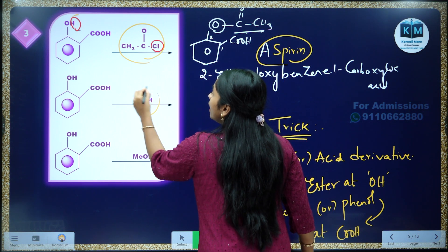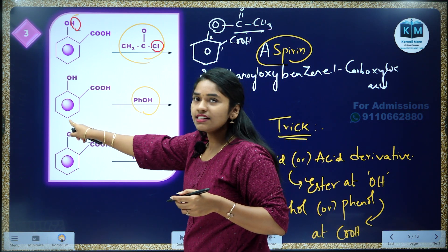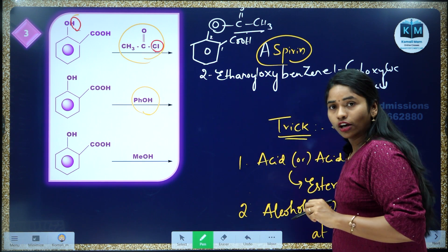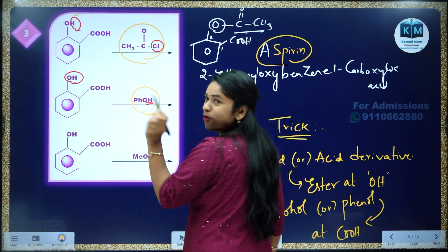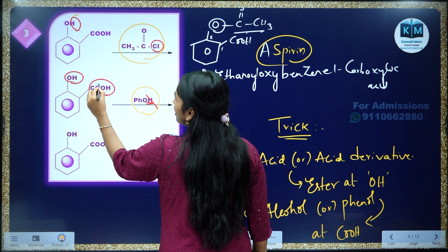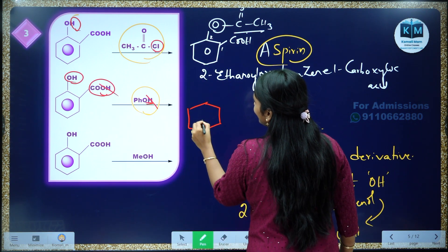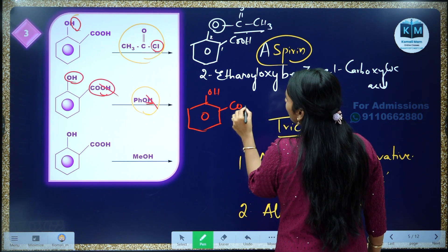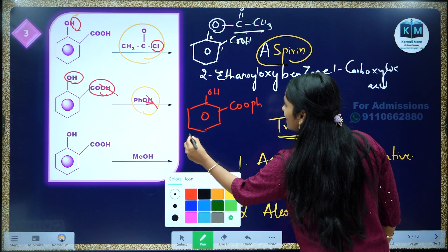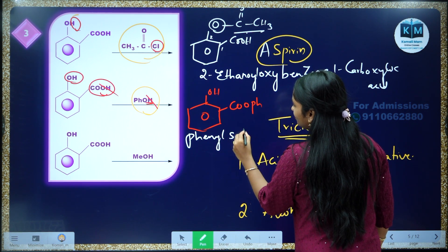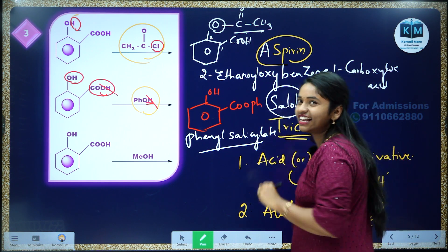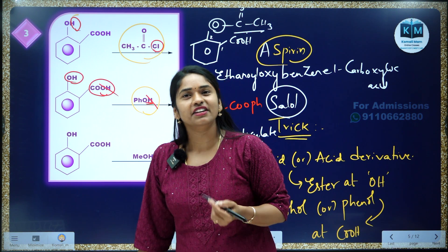If you treat phenol with salicylic acid, where does it go and attack? Using the trick: if you are treating with alcohol or phenol, the COOH reacts. The phenolic OH and the COOH react, so remove this H and remove this OH. Your product is OH with COOPH (phenyl ester). This is phenyl salicylate, also known as Sal. Sal is used in toothpaste and has antiseptic properties.